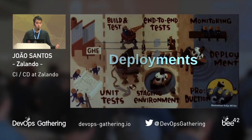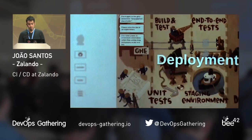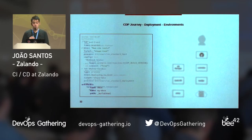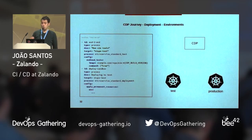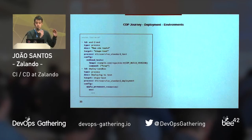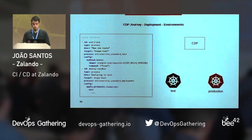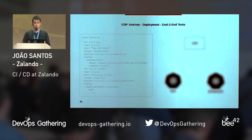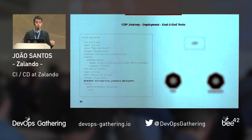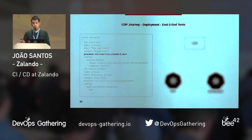After we build our project, we want to deploy it. Before we look into deployments, the important thing to know is that at Zalendo we provision Kubernetes clusters in pairs: one cluster for tests and one cluster for production. CDP currently supports two deployment processes: standard microservice deployment, and a temporary deployment to run end-to-end tests.